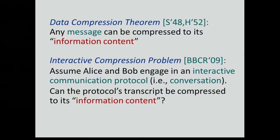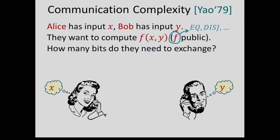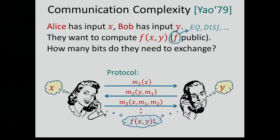I want to define this question more formally using the setting of communication complexity. In communication complexity, we have Alice and Bob. Alice has some input x, but now Bob gets a possibly different input y, and the players want to compute f(x,y) for some function f that they both know. Alice knows one part of the input, Bob knows another part, and they need to compute something that depends on both. The question is how many bits do they need to exchange? They run some communication protocol, sending messages back and forth, and this protocol is adaptive — every message may depend on the previous messages.